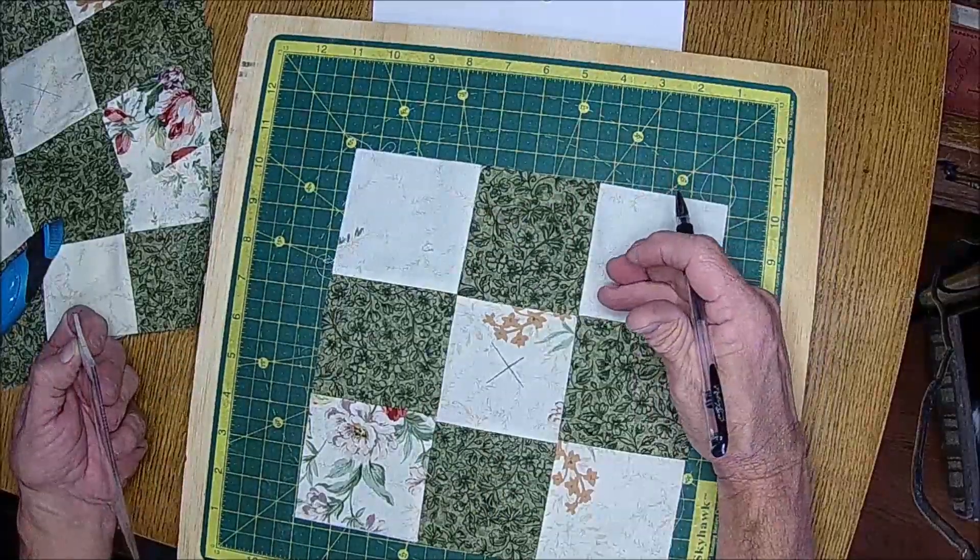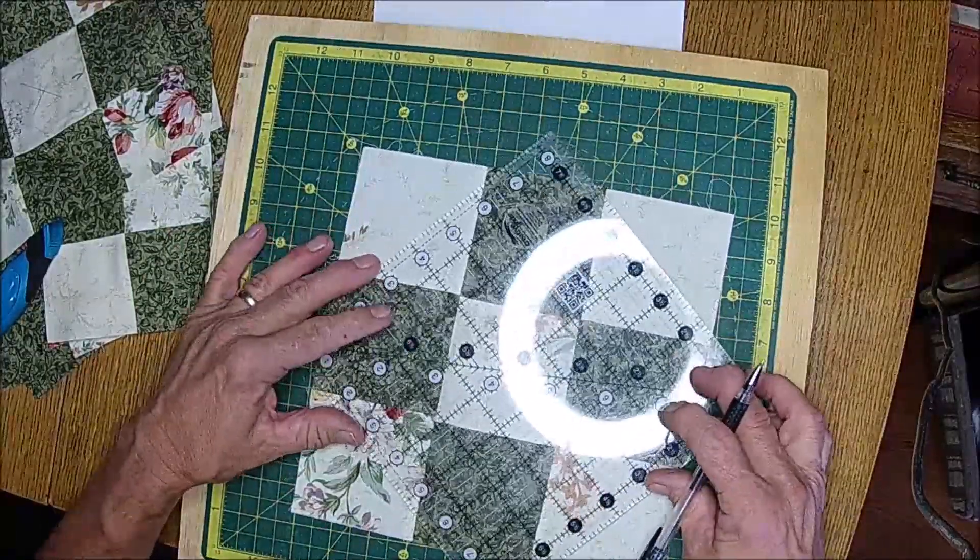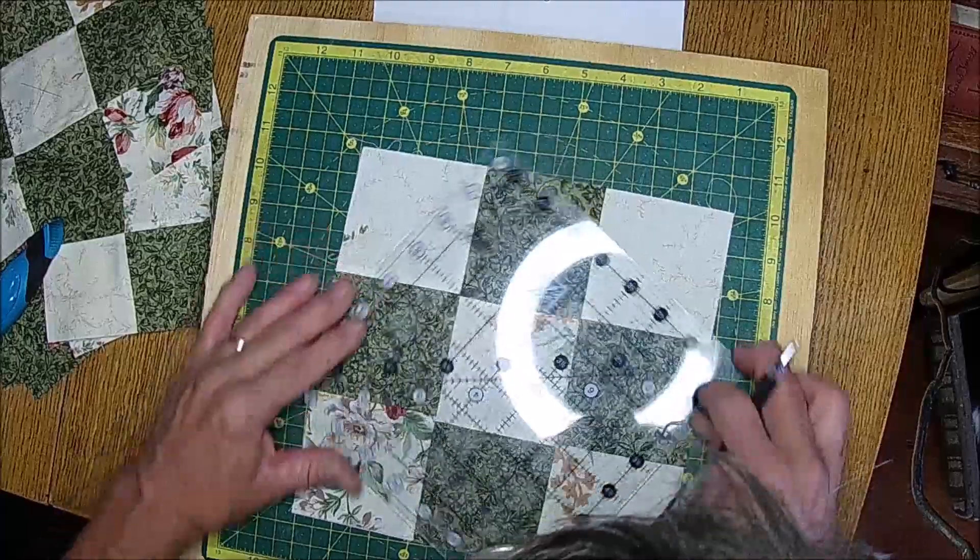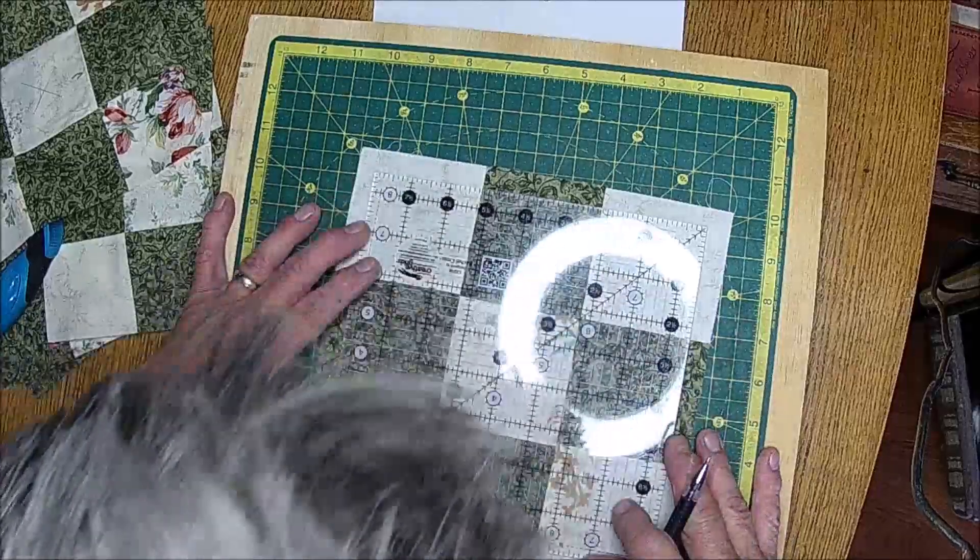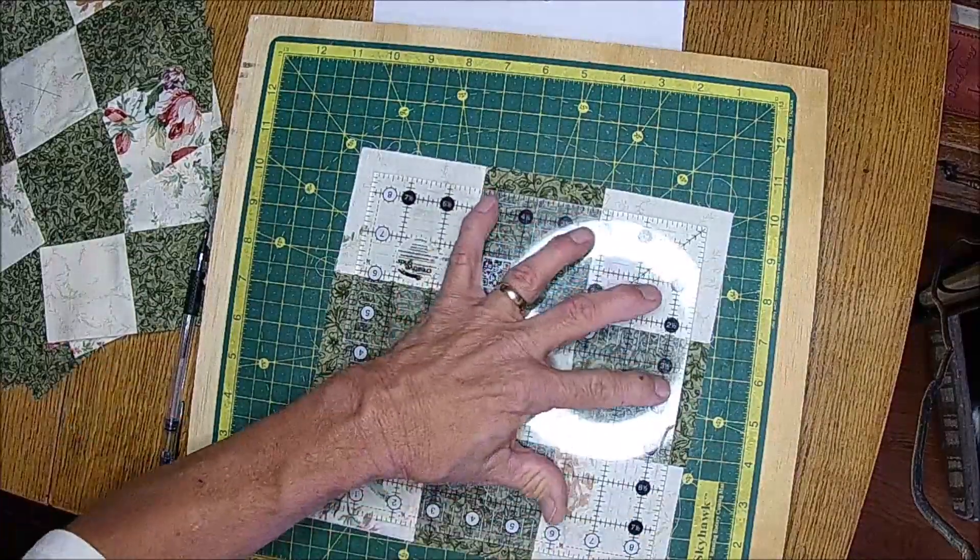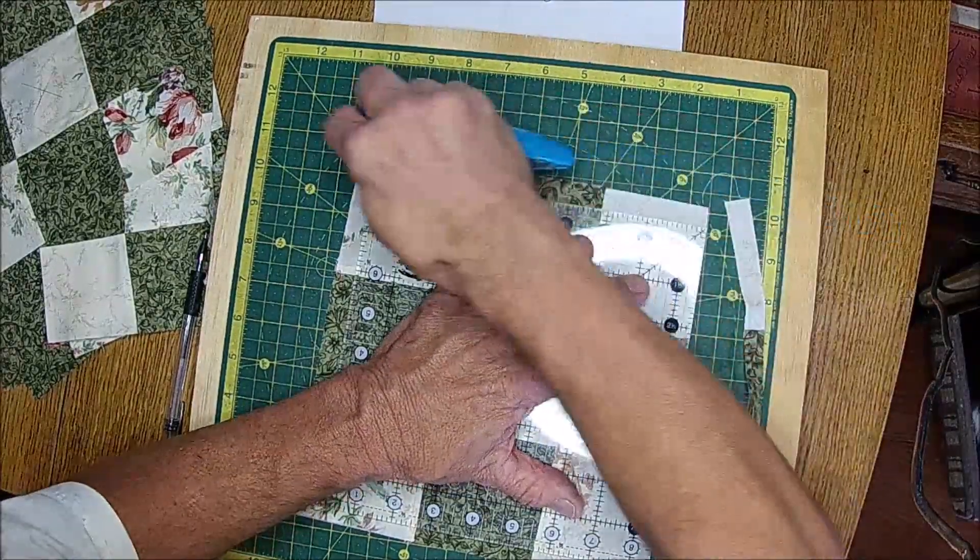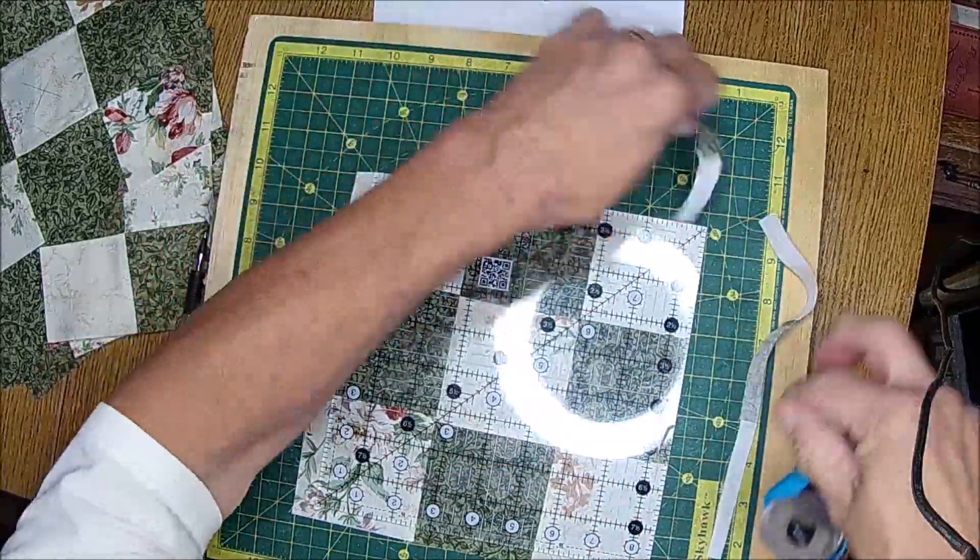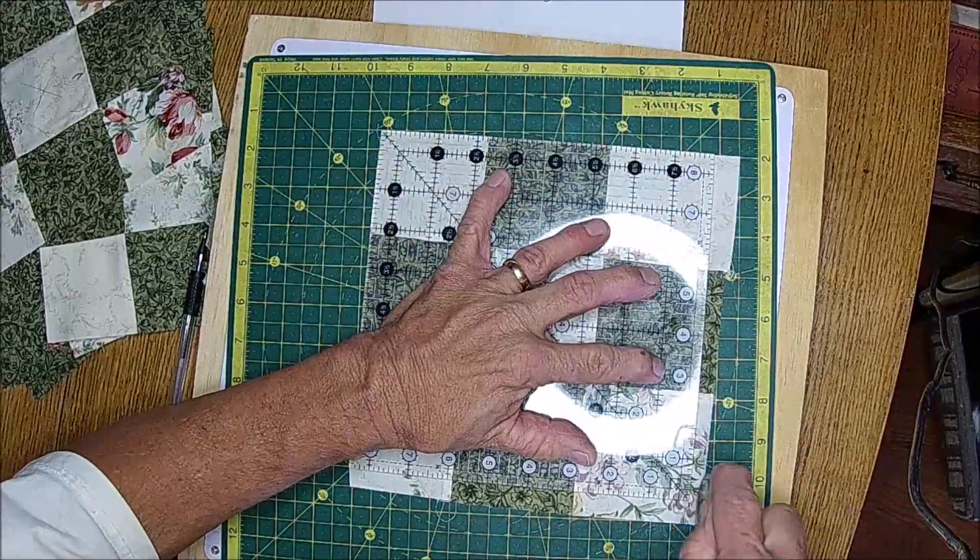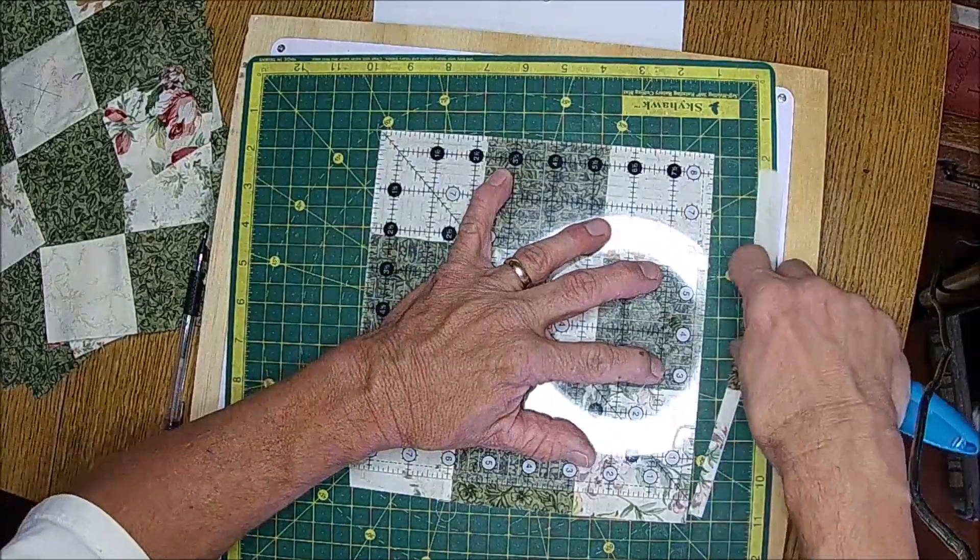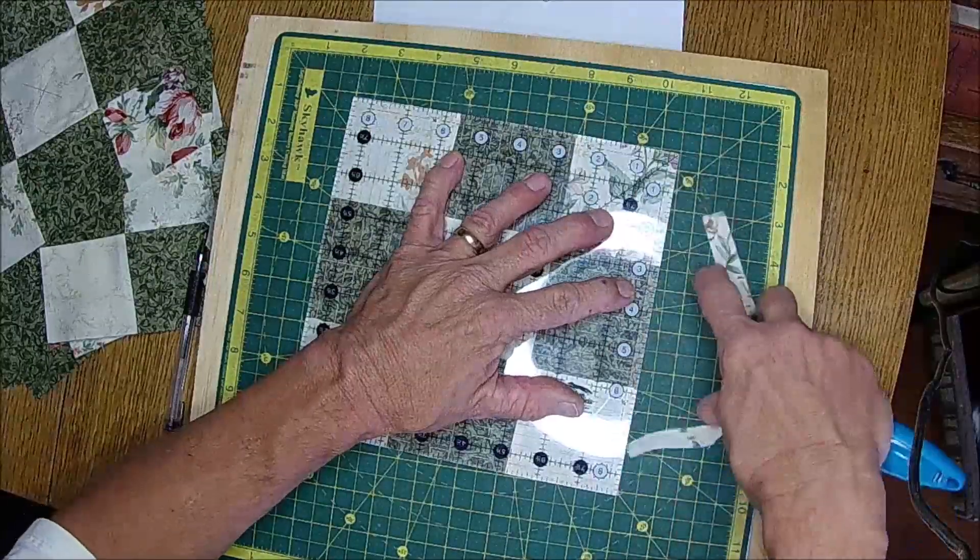But right now I just got to trim these. These weren't the right size. I hadn't trimmed these down and the right size was eight and a half inches. And when I started gluing all these together, I found out there was probably about eight or ten of them that weren't the correct size. So I'll go ahead and cut them down real quick.